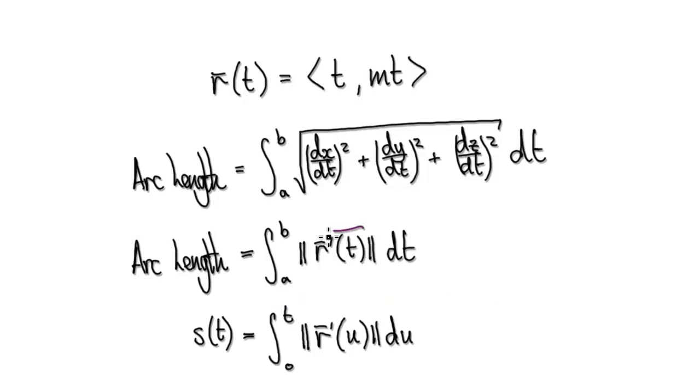So the first step is to work out this magnitude of the velocity. And then later on, we're going to integrate it in order to obtain this. So our first step is to work out this. So given this, we should be able to work out this.